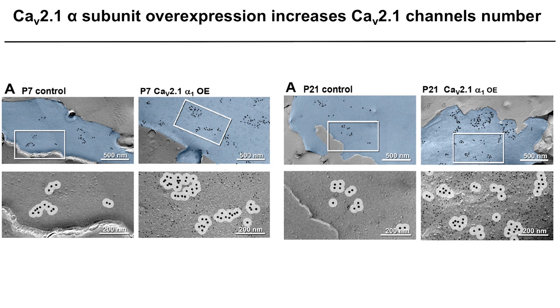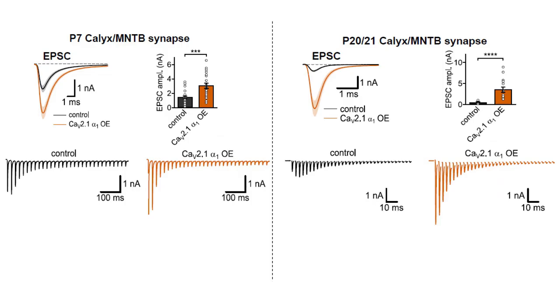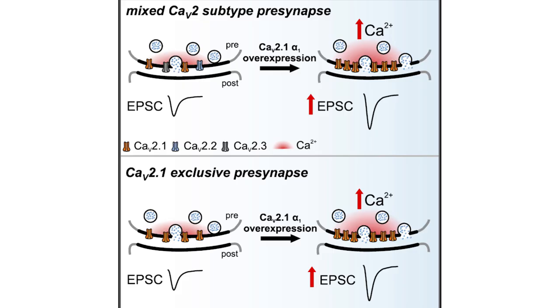We also showed that the active zone size did not increase despite increases in channel numbers. At both developmental stages, we found dramatic increases in action potential bulk release, with increases in release probability, indicating that the channels were placed in the active zone. Overall, our study proposes a new modified slot model where active zones are not saturated for CAV2.1 channels and their levels can be increased regardless of developmental stage, and also that CAV2.1 exclusive slots exist.